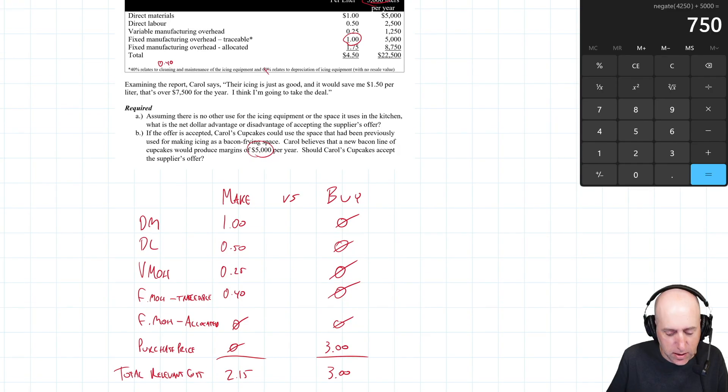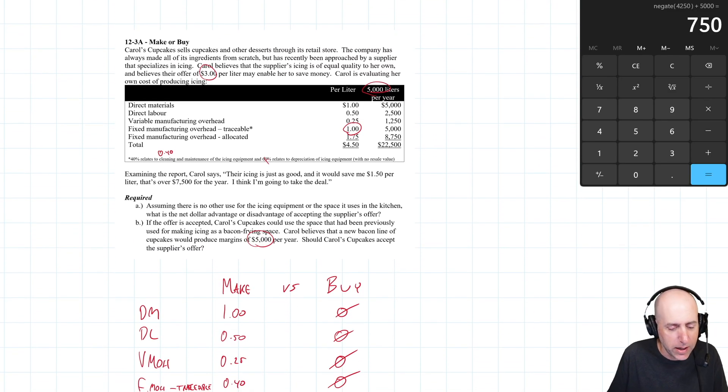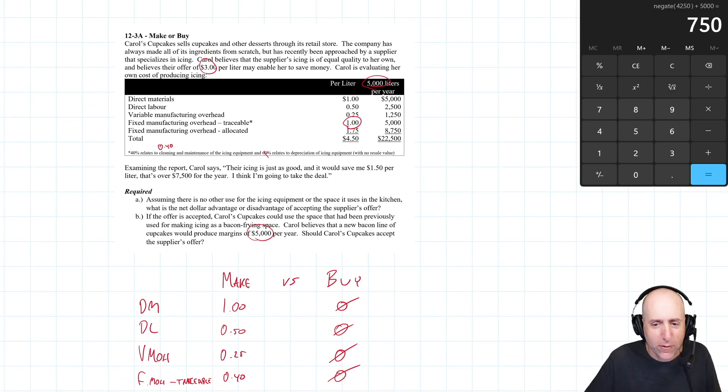And there you go. And there's lots of things she should consider. Like, does she really trust the supplier? She says the icing is good, but if the chips are down and the supplier fails to deliver, that's going to cause problems. If she's getting rid of all this old equipment, she's using the space to fry bacon, and how confident is she in the bacon cupcake? Maybe it's going to be way bigger than she planned. And that would be a good thing. So there's upside here as well. It's not all downside, but the risks are you got to trust that supplier and you got to trust your judgment on the bacon cupcake. All right. That's it for 12-3a.